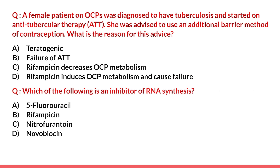Third question: a female patient on OCPs was diagnosed with TB and started on ATT; she was advised to use an additional barrier method of contraception — why? Options include teratogenicity, failure of ATT, rifampicin decreasing OCP metabolism, or rifampicin inducing OCP metabolism causing failure. We know rifampicin is a prime drug in ATT and is an enzyme inducer. It induces OCP metabolism, increasing it and causing contraceptive failure. The best answer is option D — rifampicin induces OCP metabolism and causes failure.